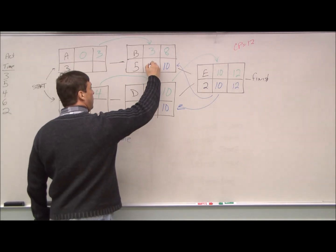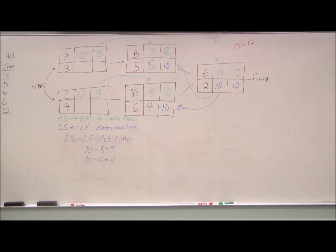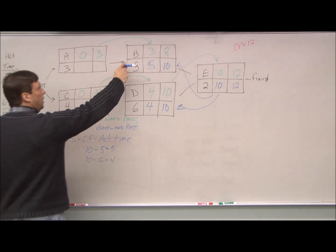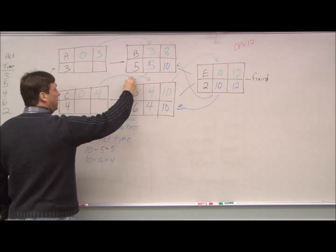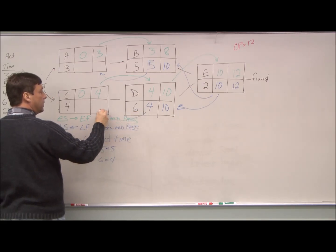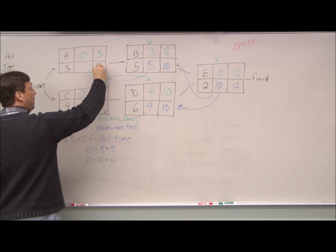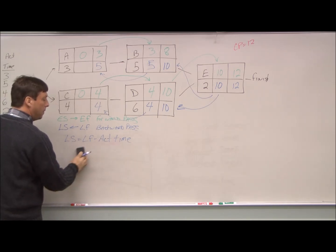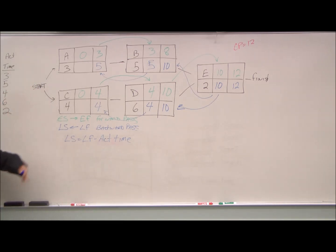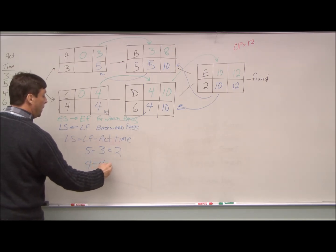So we have, whoops, almost wrote six in there. So there we have our two latest starts. B only has one immediate predecessor. So the time comes over here. And C only has one. So this comes over here. All right. So we have four and five. We do the same thing. We start calculating the latest start. Five minus three equals two. Four minus four equals zero.